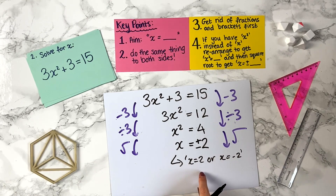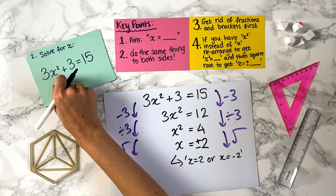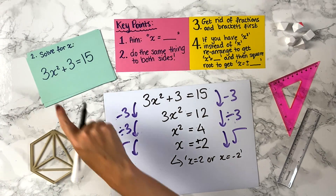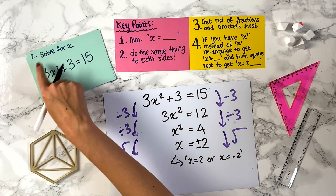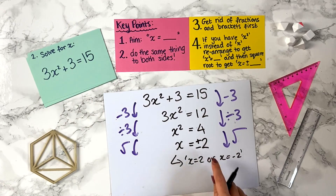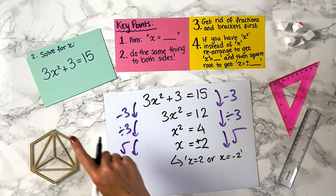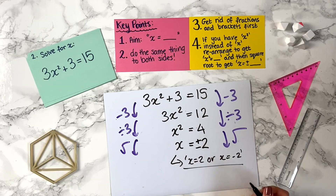You need to be clear that there are two answers. You can check by substituting in 2: 3 times 2 squared, which is 12, plus 3 is indeed 15. And the same goes if you replace 2 with minus 2. Both answers work.